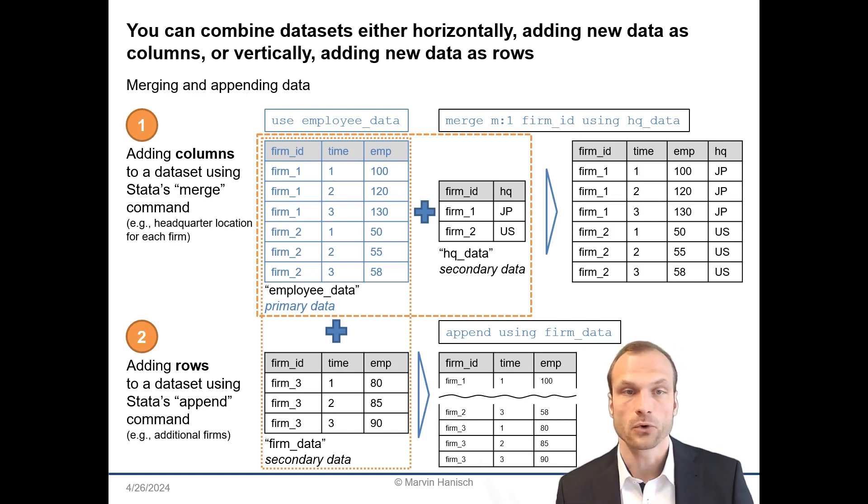While in my secondary dataset, each firm appears only once. For this reason, we need a many-to-one merge in Stata, which means we specify that the ID can appear multiple times in the primary dataset, but only once in the secondary dataset.